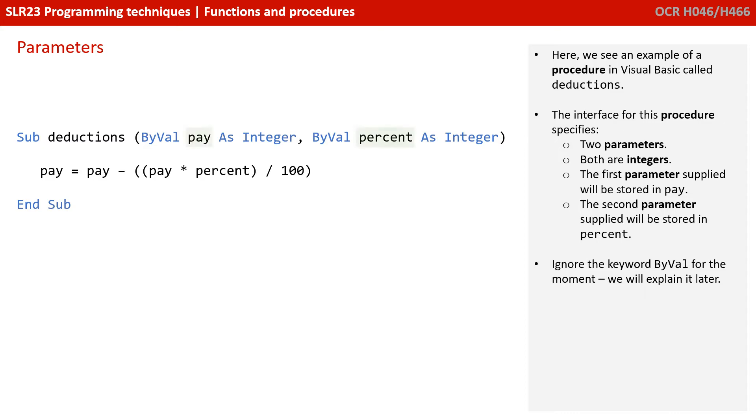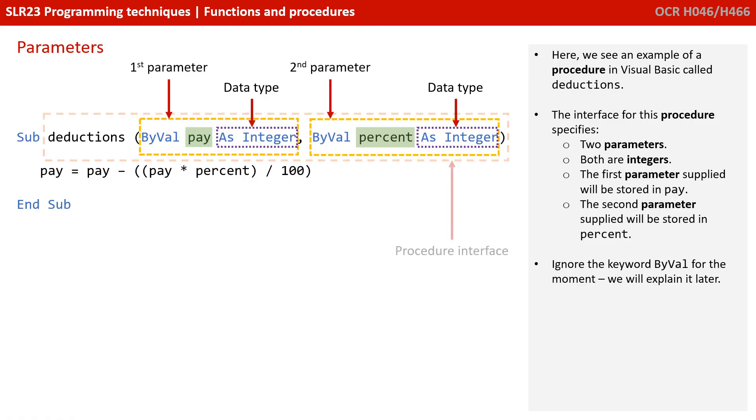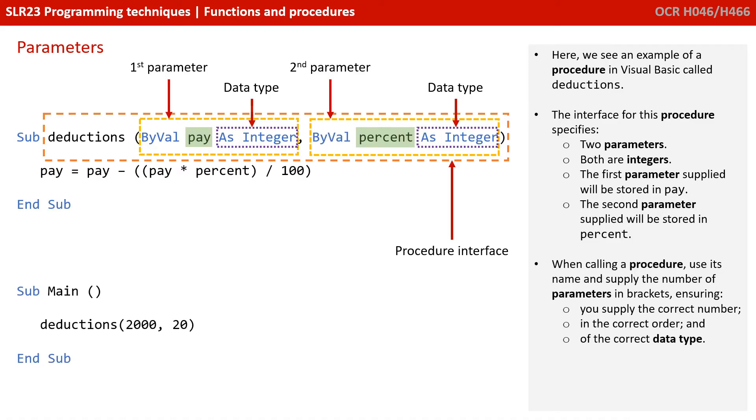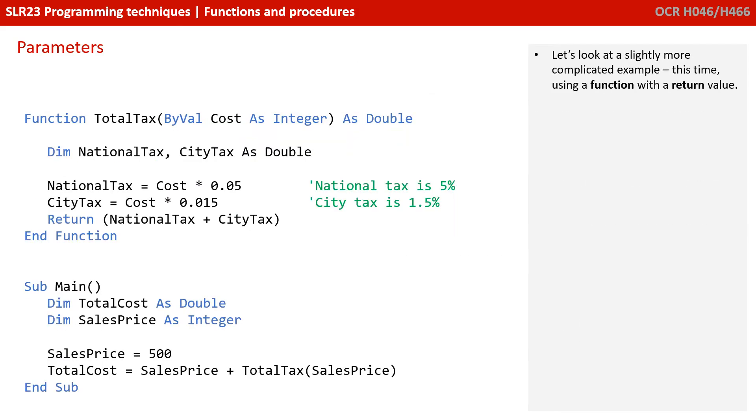Here we see an example of a procedure in Visual Basic called deductions. The interface of this procedure specifies two parameters, both integers. The first parameter supplied will be stored in pay, and the second parameter supplied will be stored in percent. Ignore the keyword ByVal for the moment, we're going to explain that later. When calling your procedure, you use its name and supply the number of parameters in brackets, ensuring you supply the correct number in the correct order and of the correct data type.